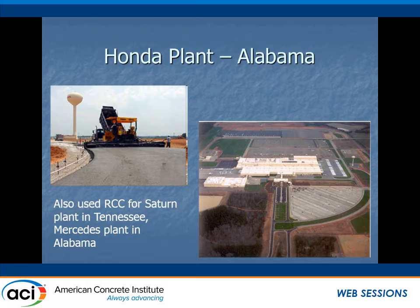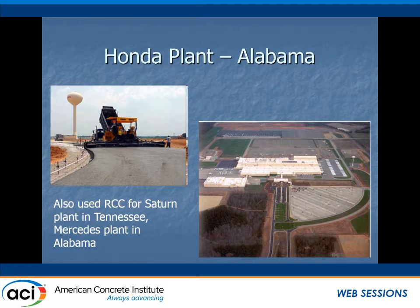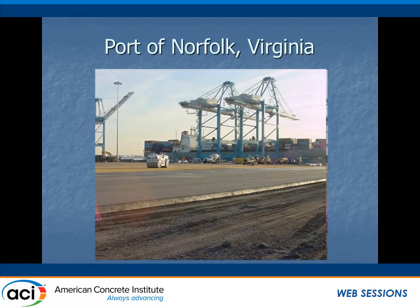A lot of the southern auto plants — the Honda plant in Alabama, RCC for the Saturn plant in Tennessee, and the Mercedes plant in Alabama — represent significant use. I think the Honda and Mercedes plants were looking at the Saturn performance and the fact that they'd essentially had no maintenance as a standpoint. There's also an example of a large port facility, the Port of Norfolk in Virginia.